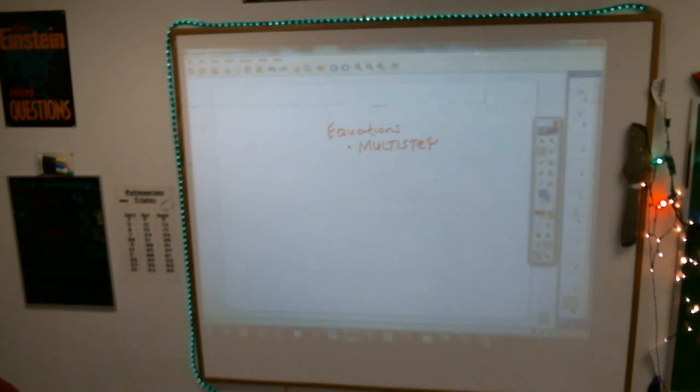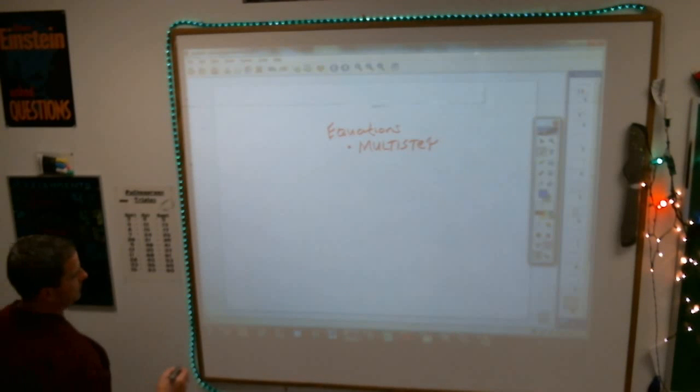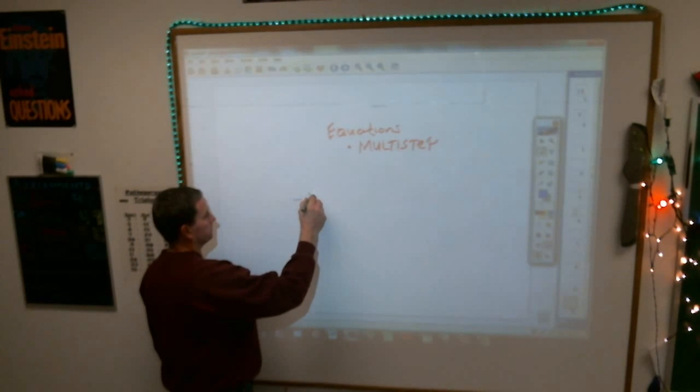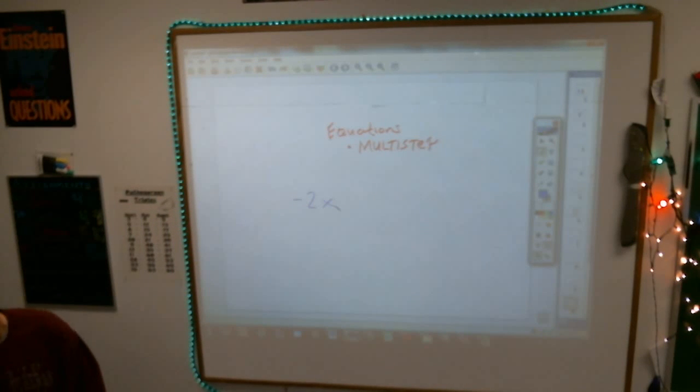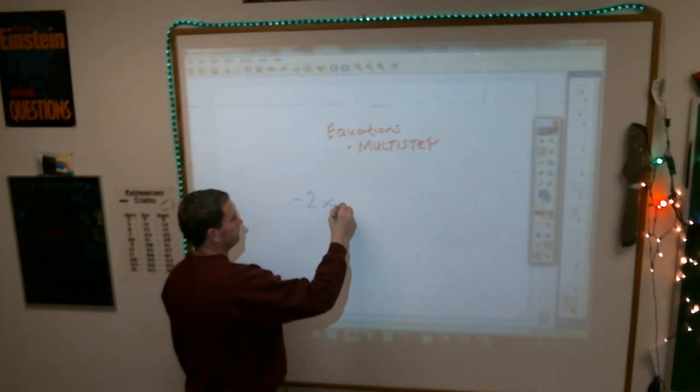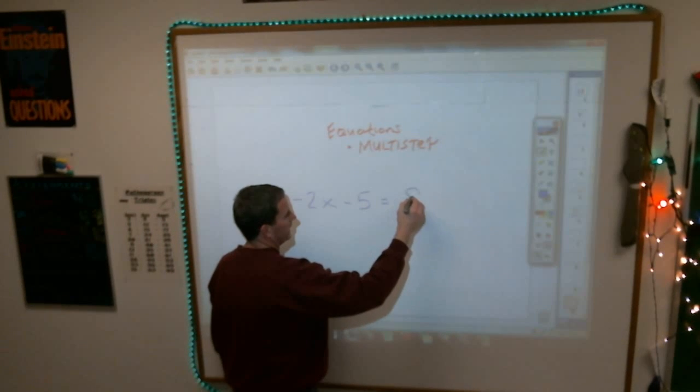I'm working ahead to a little bit more complicated equations. For example, if you have this equation, negative 2x minus 5 equals 9.